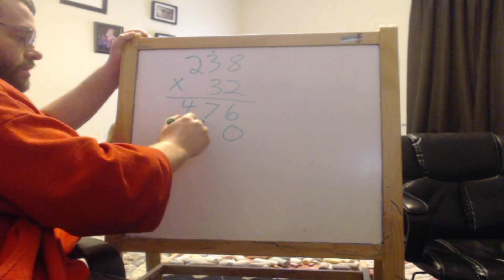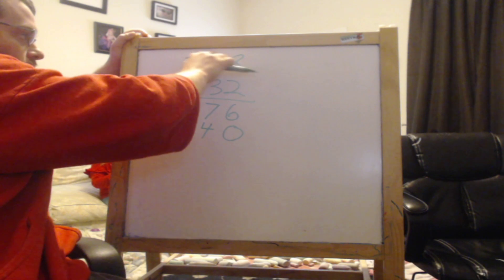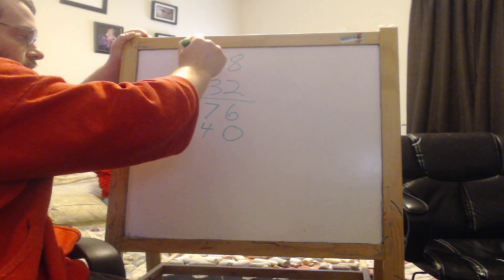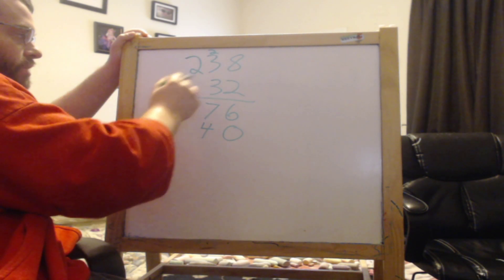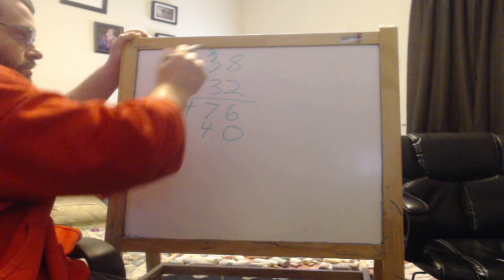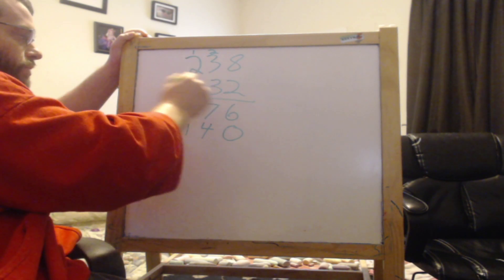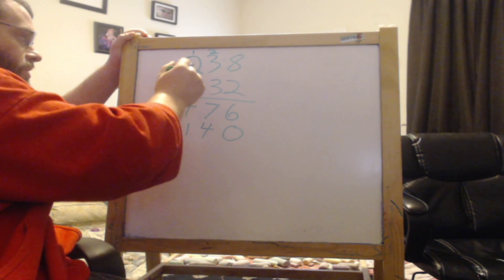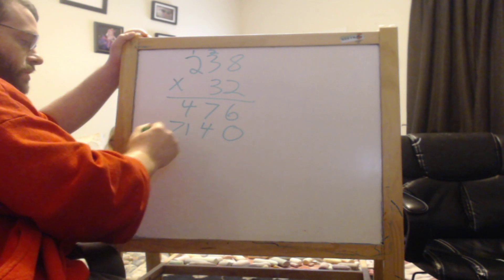3 times 8, 24. You can erase this one. Put the 2 here. 3 times 3 is 9, plus 2 is 11. 3 times 2 is 6, plus 1, 7.